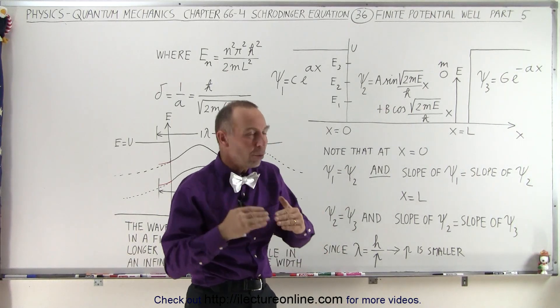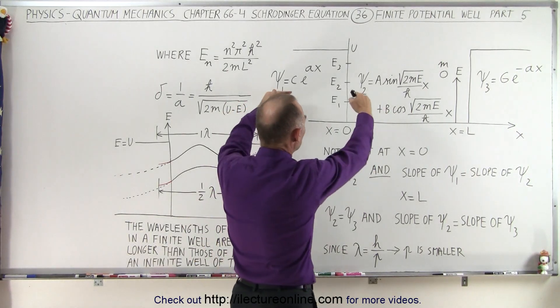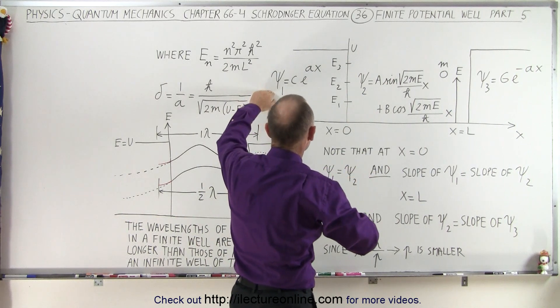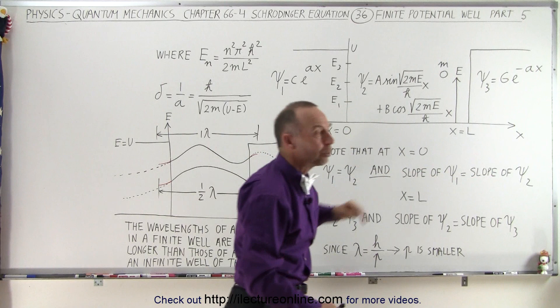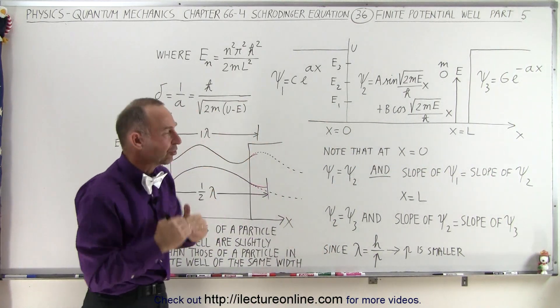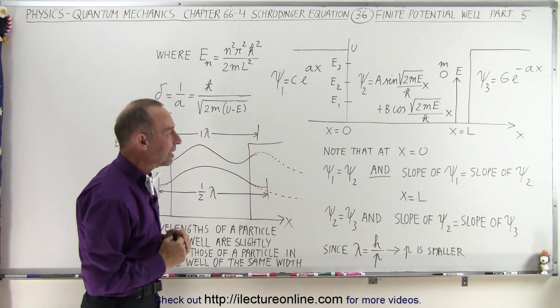And also that the slope of the two functions, the derivative of the two functions, of the function 1 and the function 2, that the slopes equal as well. So not only do the value of the function have to equal, but the slopes have to equal as well.